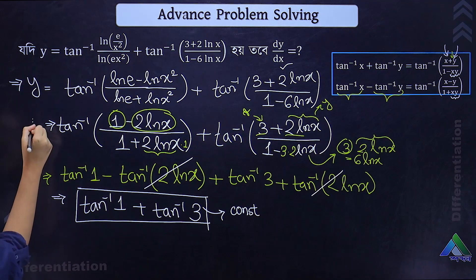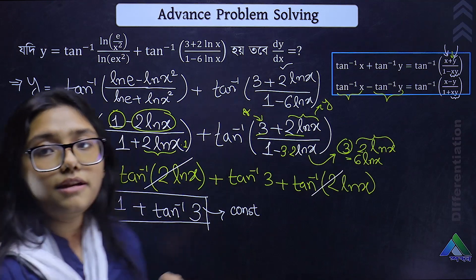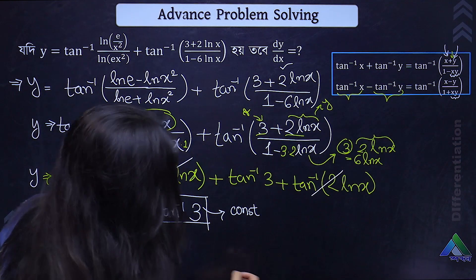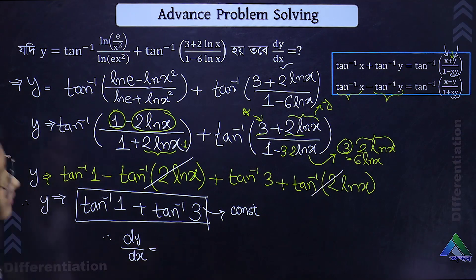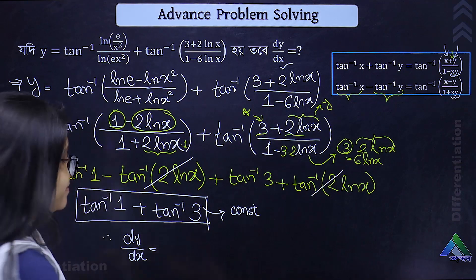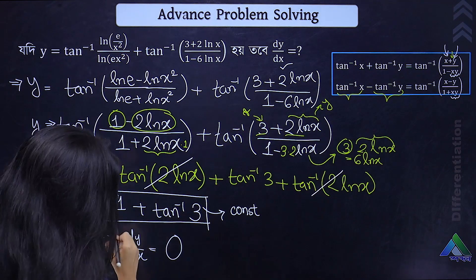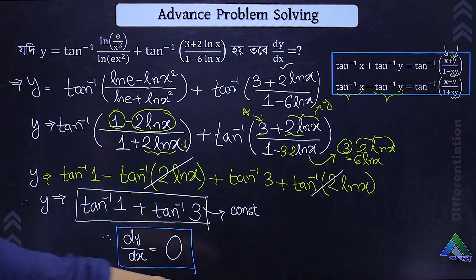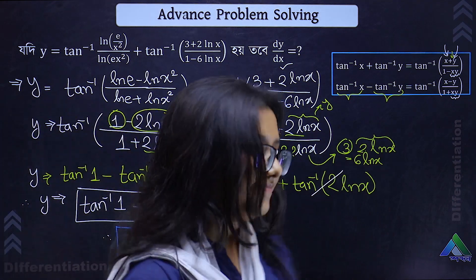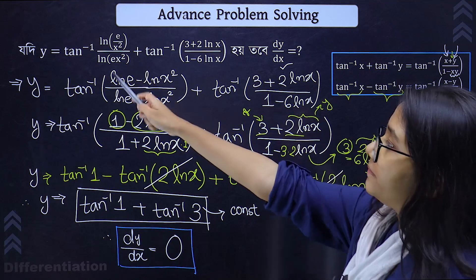Therefore, y equals a constant — tan inverse 1 plus tan inverse 3. Since y is a constant, dy/dx equals 0. That is the answer: dy/dx = 0.